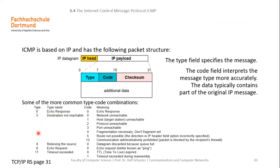For instance, 8 is for echo request, 0 for echo response, 3 for destination unreachable, and 11 for time exceeded. For the same type number we could have different code numbers. For destination unreachable, code 0 means network unreachable and code 1 means host unreachable. For time exceeded, code 0 means time-to-live expired and code 1 corresponds to reassembly timeout exceeded.